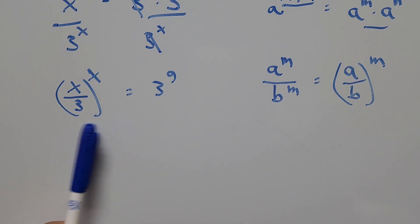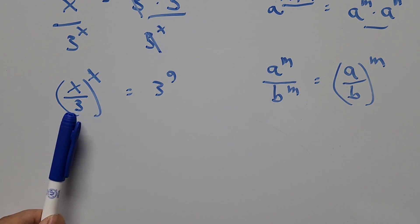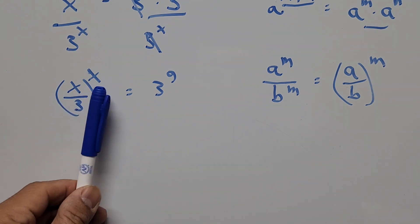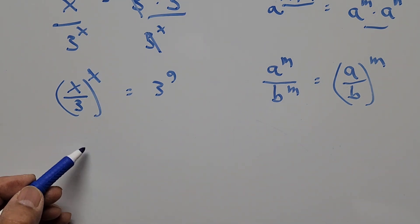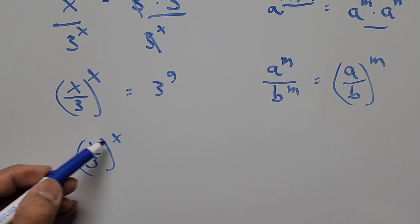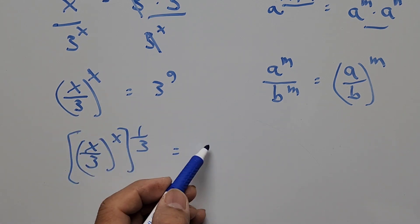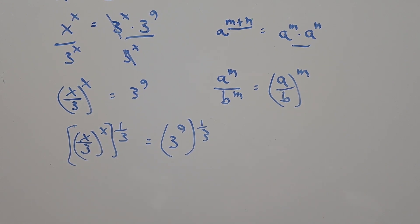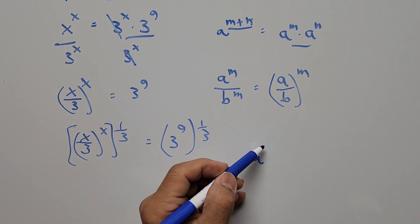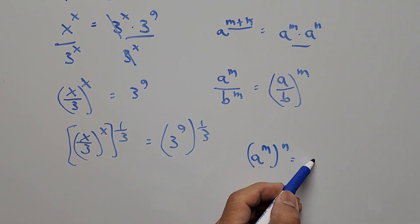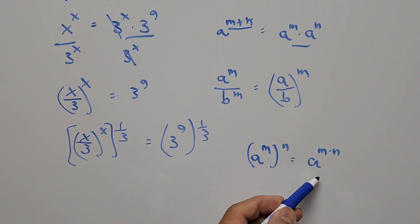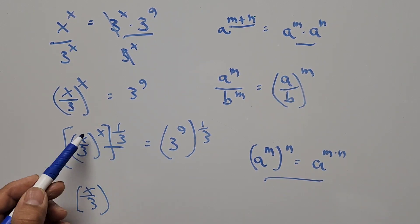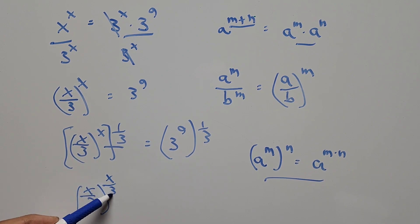Our target is to make the exponent look exactly the same as the base, which is x divided by 3. To achieve this, we raise the whole equation to the power of one-third — the reciprocal of 3. So we have (x divided by 3) to the power of x, raised to the power of one-third, equals 3 to the power of 9 raised to the power of one-third. Using the rule (a to the m) to the n equals a to the m times n, we multiply the exponents on both sides.